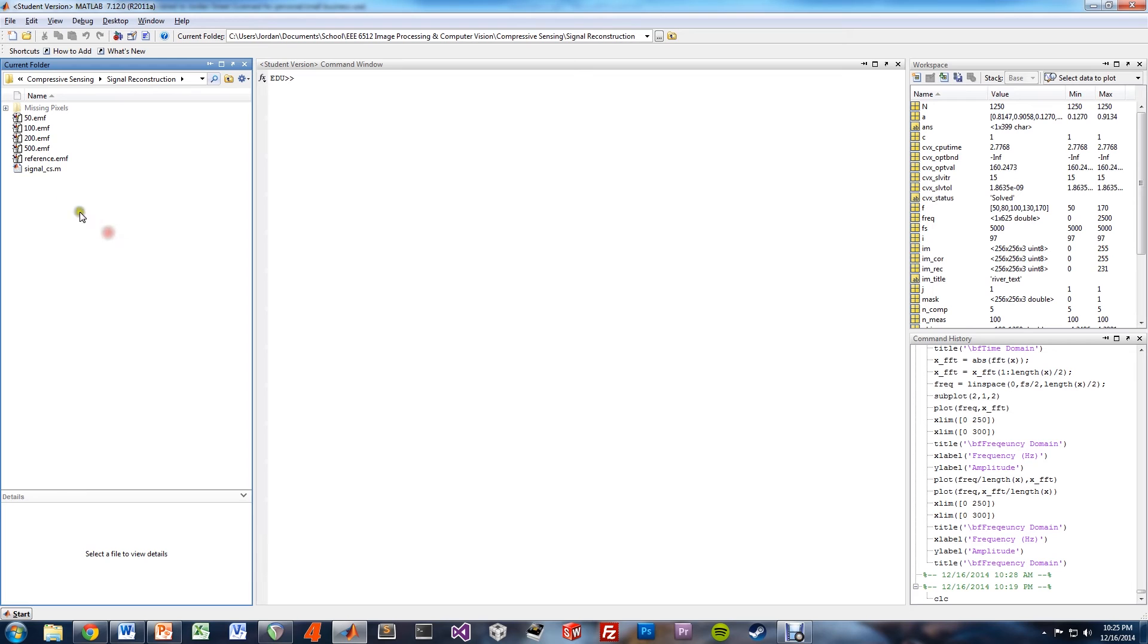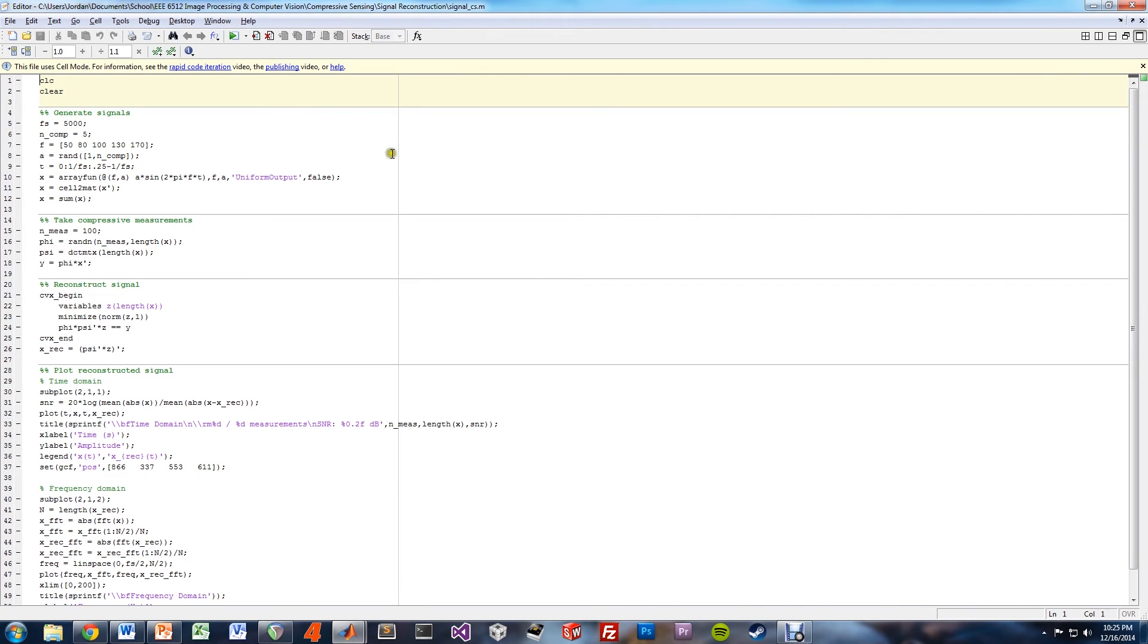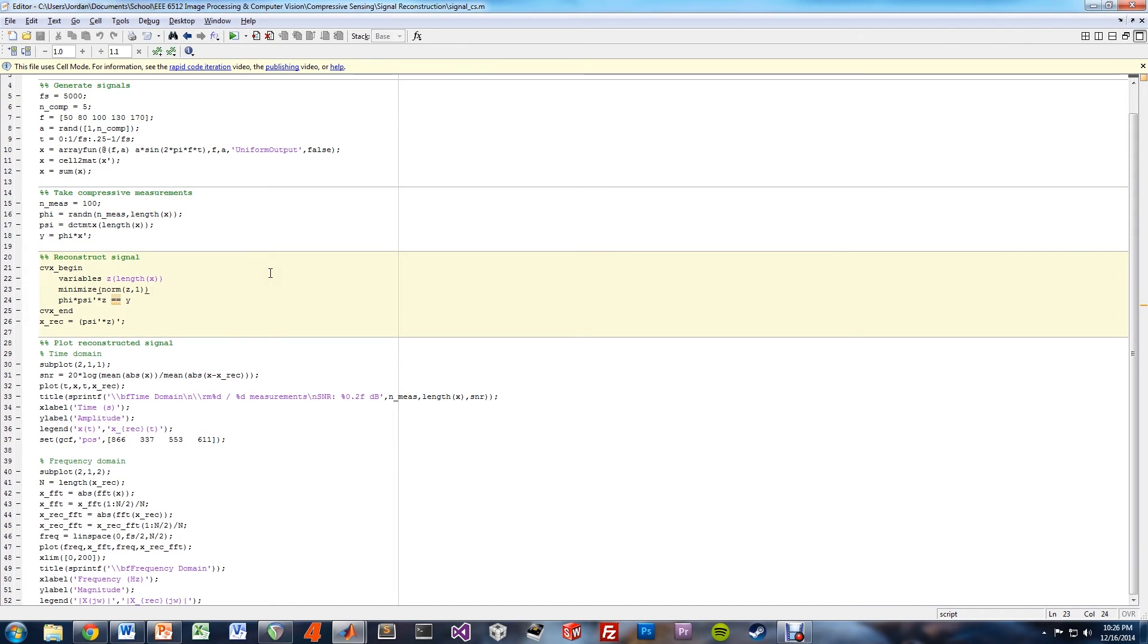So within the signal reconstruction folder, we have this main signal.cs m file. This file generates a signal made up of, in this case, five random sinusoids. It then takes compressive measurements according to the number of measurements, and then reconstructs the signal using the L1 minimization techniques we talked about previously.